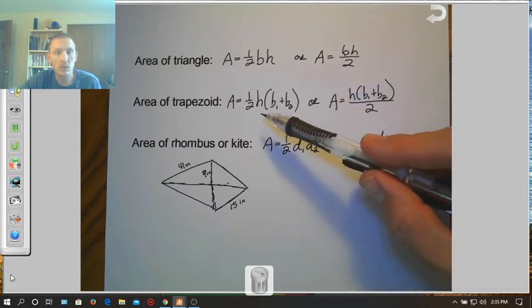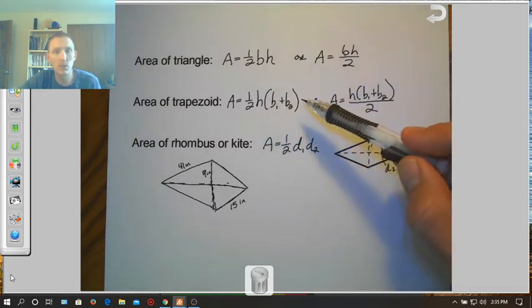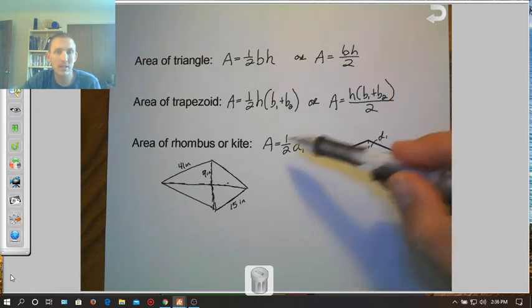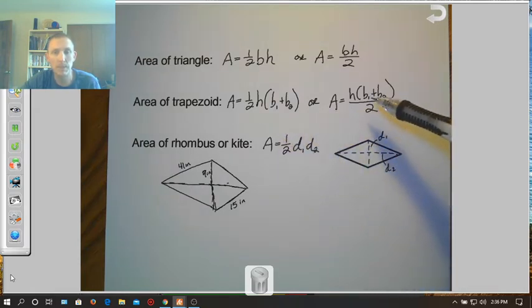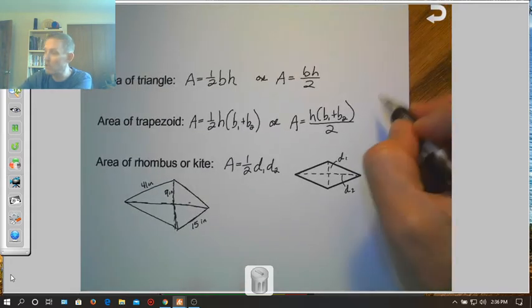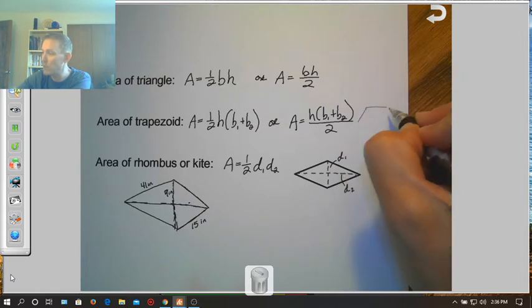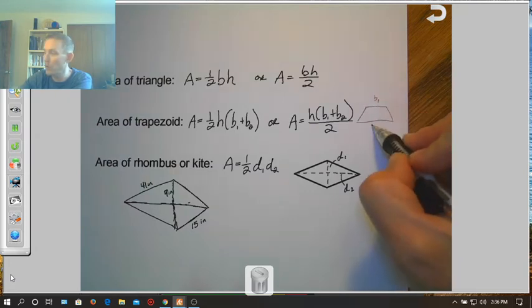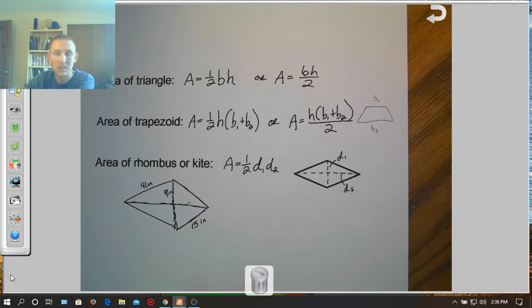The area of a trapezoid, 1 half height, b1 plus b2, or the area is height times b1 plus b2 all over 2. And again, it's the same idea as a triangle, just depends how you want to set it up. Now b1 and b2, that's going to be the two bases of your trapezoid. So if I have a trapezoid here, the two parallel lines of a trapezoid are your b1 and your b2. It doesn't matter how the trapezoid is drawn, b1 and b2 are always going to be the two parallel sides.